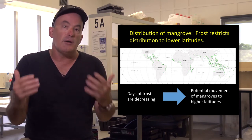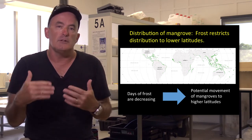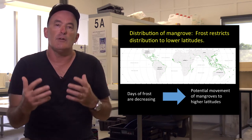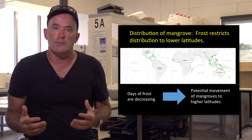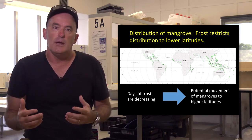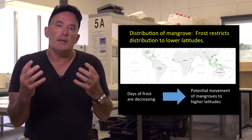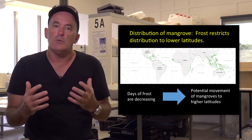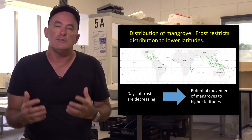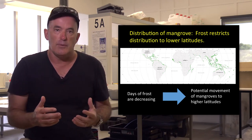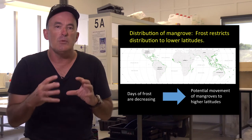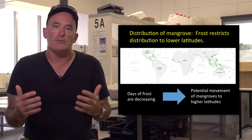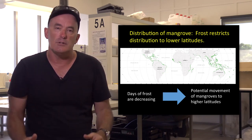One of the barriers to the extension of mangroves to higher latitudes is the occurrence of frost. As high latitudes are warming, the frequency of days upon which frost occurs is decreasing, potentially removing one barrier to the expansion of mangroves to higher latitudes.